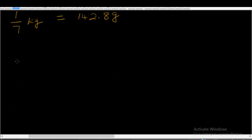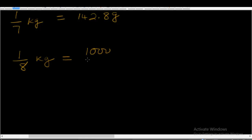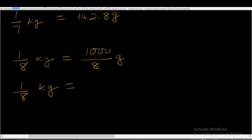Now let's proceed by dividing by 8. 1 over 8 kg is equal to 1,000 over 8 grams. So 1 over 8 kg is equal to — if you divide 1,000 by 8 — you will get 125 grams.